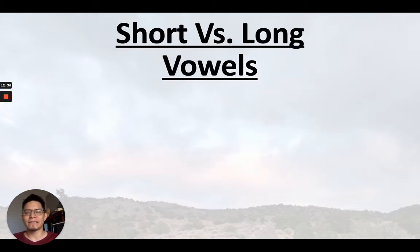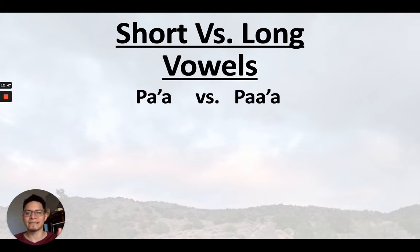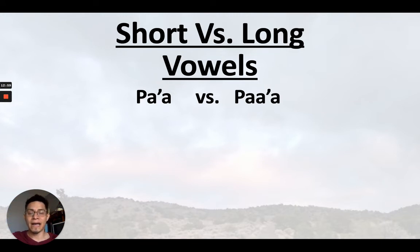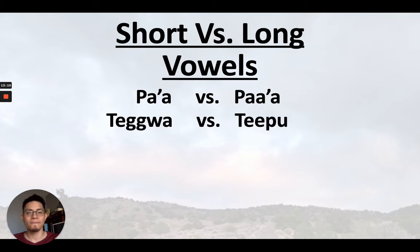Now let's look at some examples of the short versus long vowels. This grammar book does not provide examples, so I'm adding this for extra context. First, the short A versus the long A. 'Bah' means high, up high. But the lengthened A — 'baa' means water. Hear the difference. Next, the word 'digua' — which is a type of rodent, a rat — versus the long E version. Hear the difference: lengthened versus short.